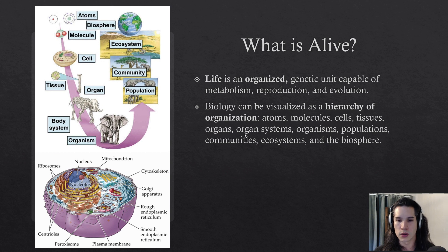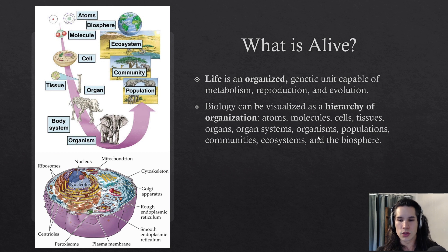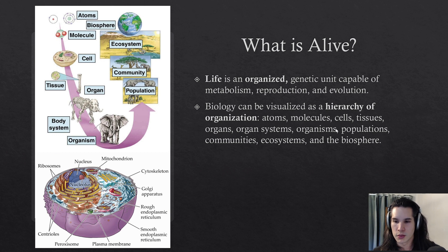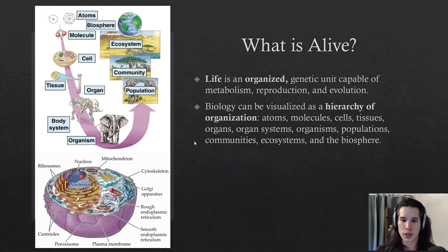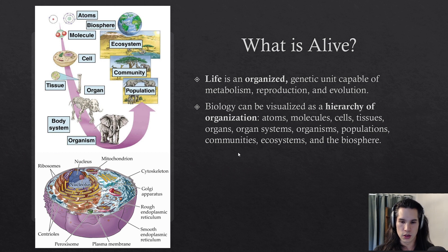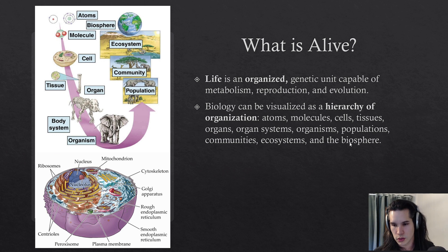You can also make organ systems using a collection of organs. Eventually you get organisms, and then multiple organisms of the same species create a population. More than one species in an area would be a community. All of your communities plus the abiotic factors compose an ecosystem, and then eventually you get the biosphere, which is our planet.